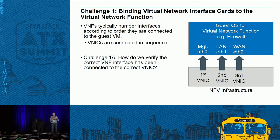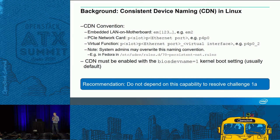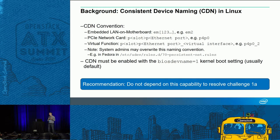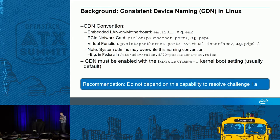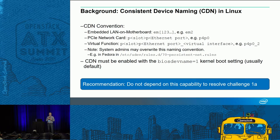The reason this is a particular challenge: if you think of a firewall deployment, it's really important that the firewall understands what's the LAN connectivity versus what's the WAN connectivity — pretty bad to mix those up. One thing we looked at first is consistent device naming in Linux — a set of conventions that helps you understand which type of device you're connected to. If it's a LAN on motherboard, it's EM followed by a number. If it's a PCIe device, it's P followed by the slot, followed by P followed by the device number. With virtual functions it extends further. However, we're not recommending relying on this method because the administrator could change it, and it requires specification on the kernel boot commands.